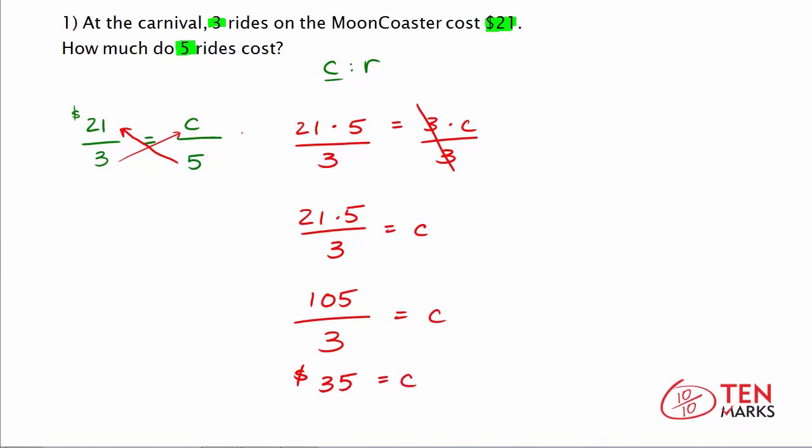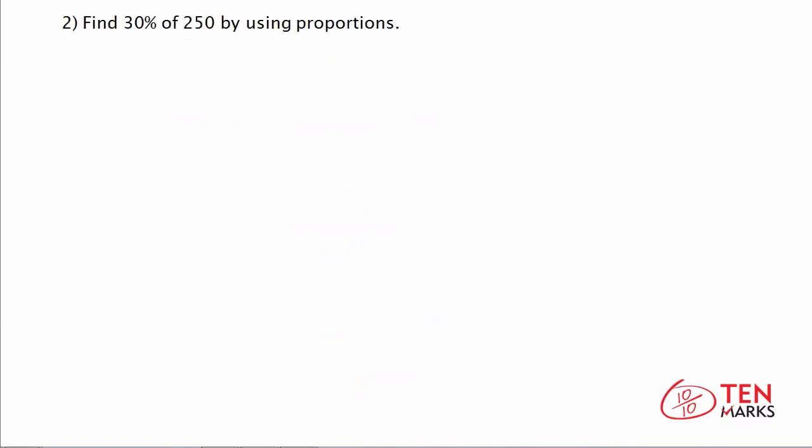For five rides, it will cost you $35 to ride. Let's try another problem together. Find 30% of 250 by using proportions. Remember a percent is a special fraction where the denominator is always 100. So, the fraction form of 30% would be 30 over 100. You're going to use proportions by setting this equal to some number or some part of 250. Make this an algebraic expression by using cross multiplication.